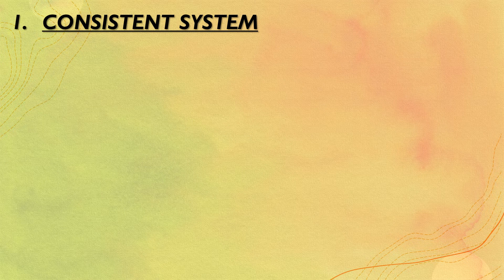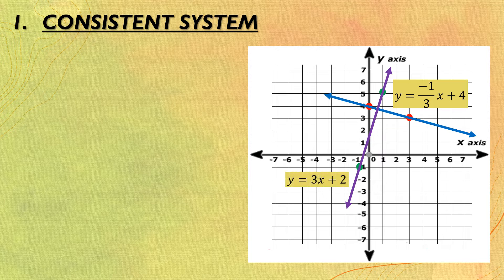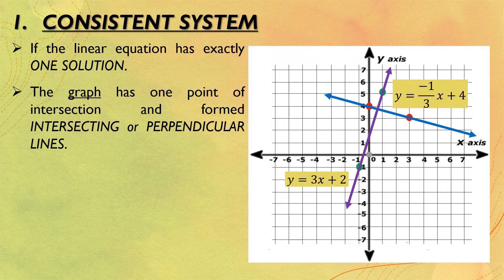Next is the second condition for the consistent system. Let us consider this given graph. The blue line is for the equation y equals negative one-third x plus 4, and the purple line is for the equation y equals 3x plus 2. If the linear equation has exactly one solution, it is still called consistent — it consists of only one solution. The graph has one point of intersection and forms intersecting or perpendicular lines. Now let us discuss perpendicular lines.